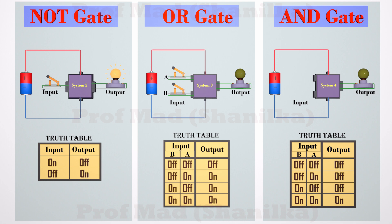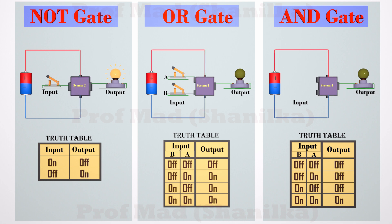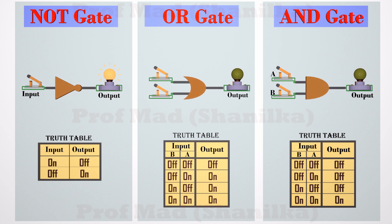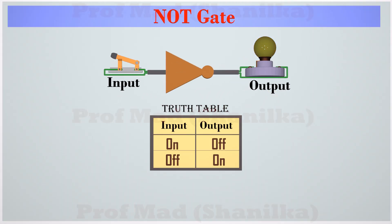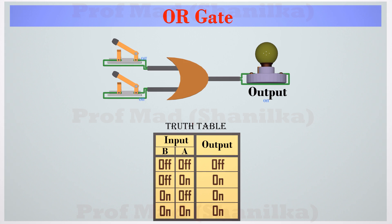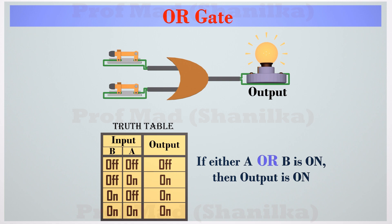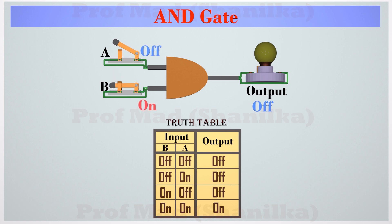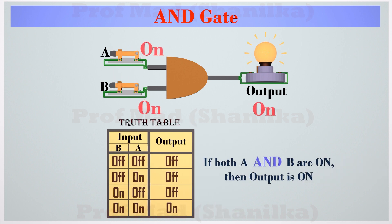NOT gate. OR gate. AND gate. In digital electronics, we use symbols to represent these systems. For ease of understanding, let's forget about the power supply. Don't confuse yourselves — those are just symbols that represent a system following its logic. This is the NOT gate in its symbolic form — it inverts the input. This is the OR gate in its symbolic form — if either of the inputs is on, the output turns on. The output of the AND gate turns on only if all of the inputs are on.